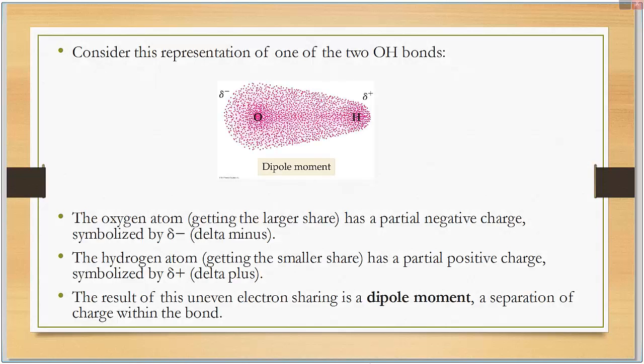Consider this representation of one of the two OH bonds. The oxygen atom, getting the larger share, has a partial negative charge. The hydrogen atom has a partial positive charge, symbolized with delta plus.